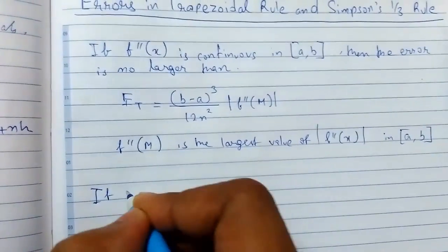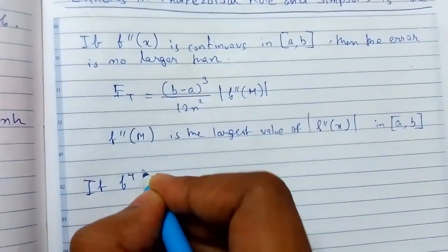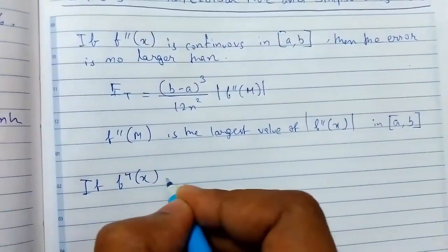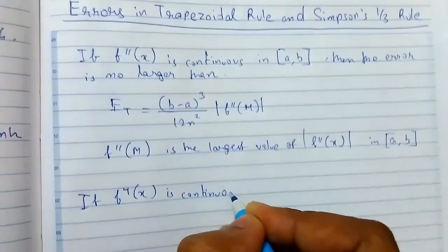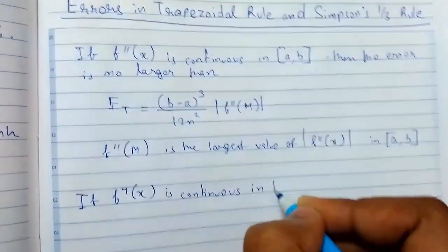Again, if the fourth derivative of f(x) is continuous in the interval [a,b],